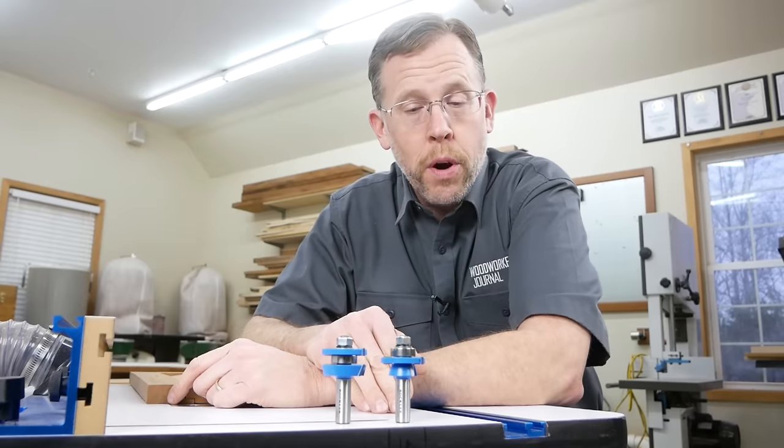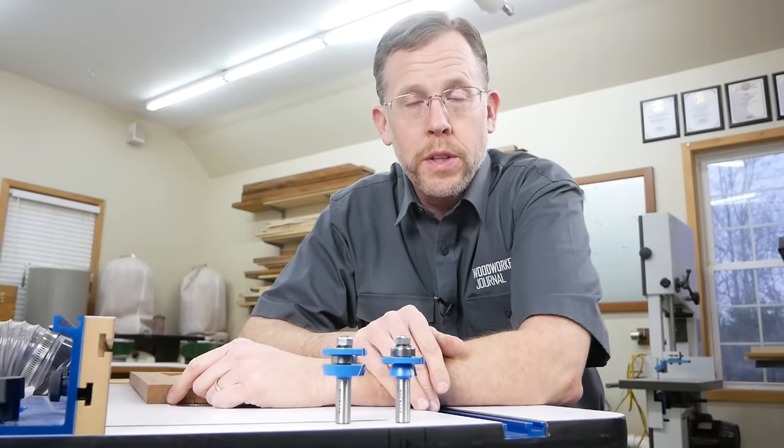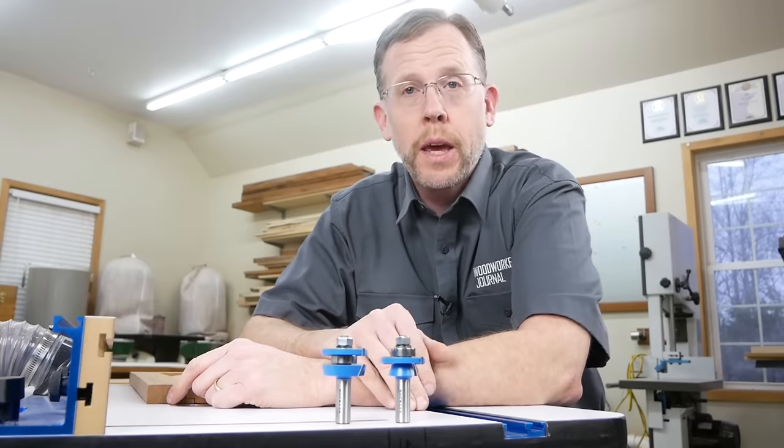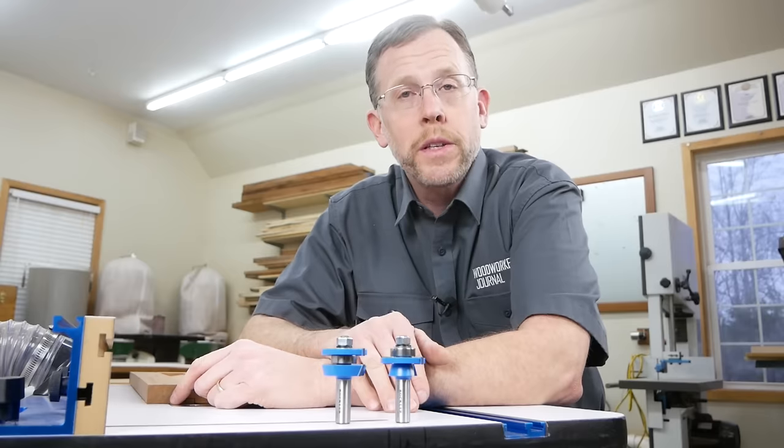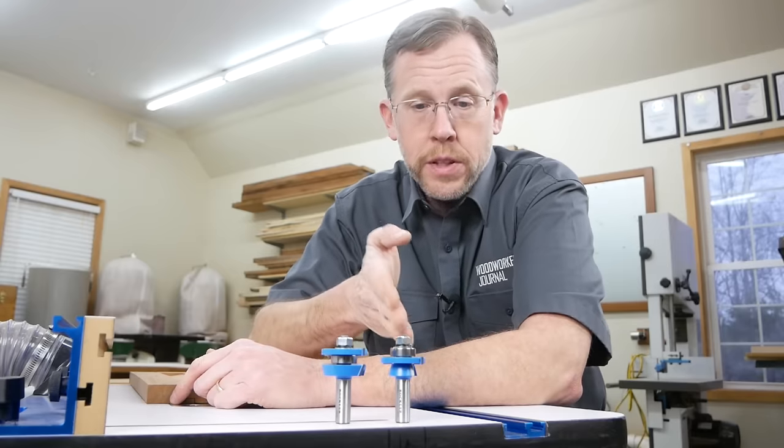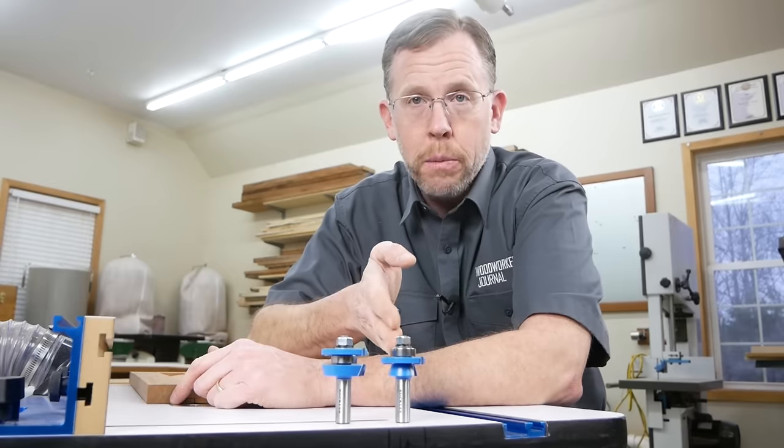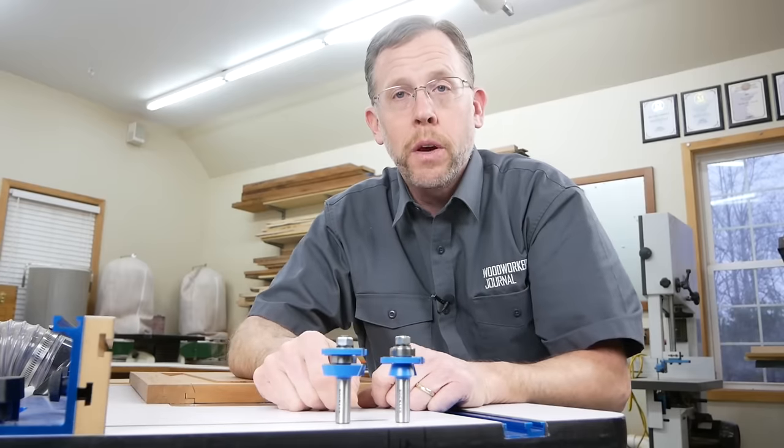Before we jump into the routing process, let's get better acquainted with these bits. First of all, the names. When you shop for these bits, you may see them called cope and stick bits or rail and style bits. It means the same thing, and you need both of them.